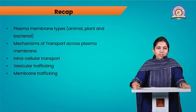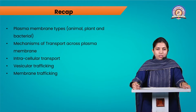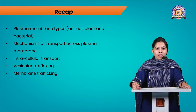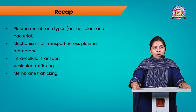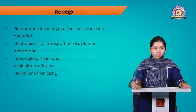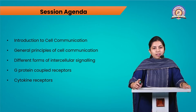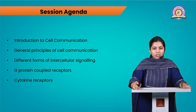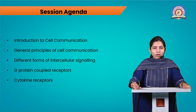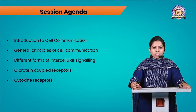In previous lectures, we discussed plasma membrane types and saw the structure of animal, plant, and bacterial plasma membranes. We also covered the mechanism of transport across the plasma membrane, and discussed in detail the mechanisms of intracellular transport, vesicular trafficking, and membrane trafficking. In today's lecture, we will see an introduction to Cell Communication, general principles, different forms of intracellular signaling, G-protein coupled receptors, cytokine receptors, and associated signaling pathways.